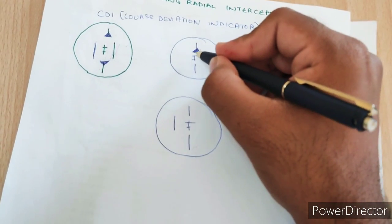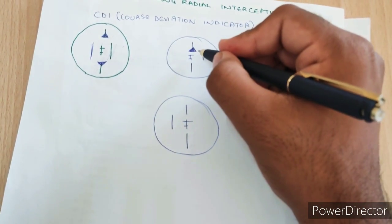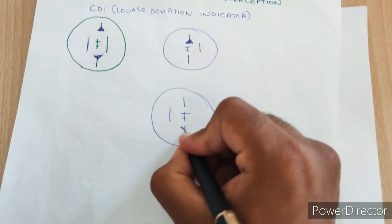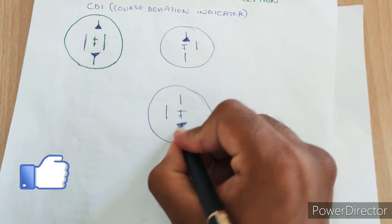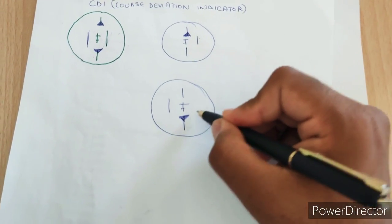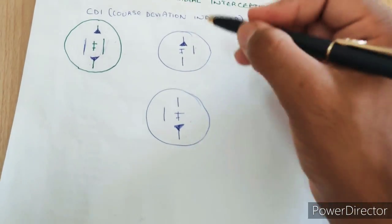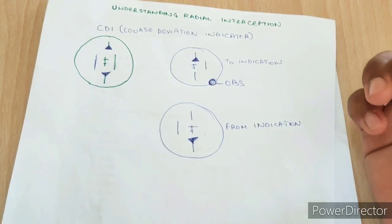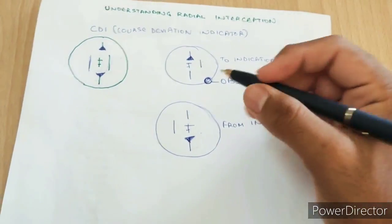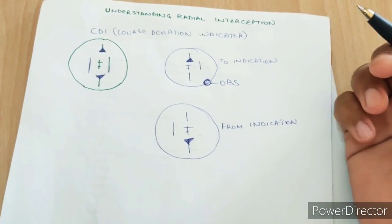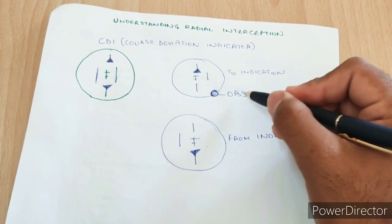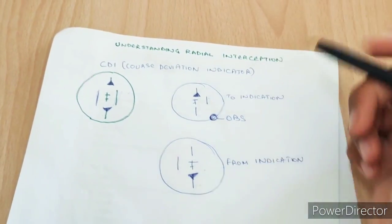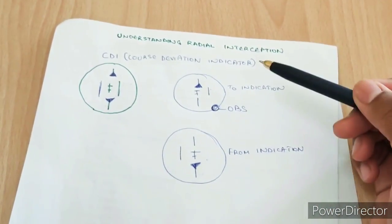If the arrow is at the top, it means we are going towards the station. If the arrow is at the bottom, it means we are going away from the station — that is the 'from' indicator. The CDI is one of the most crucial instruments used for instrument flying. In the traditional conventional cockpit, you have the Omni Bearing Selector or OBS knob which you can turn clockwise or anti-clockwise to set the course according to your choice.